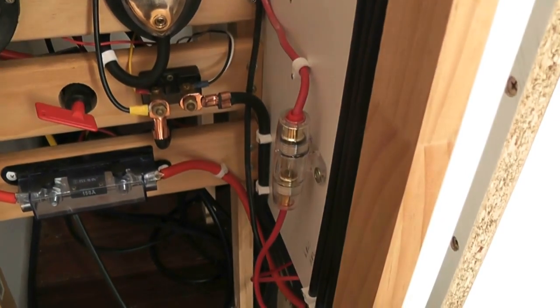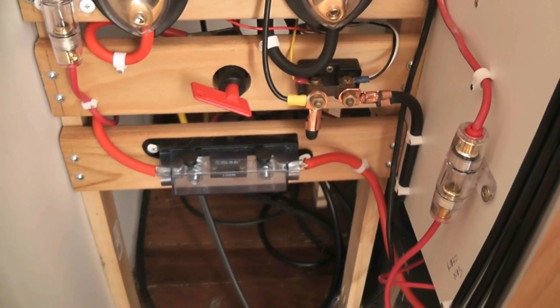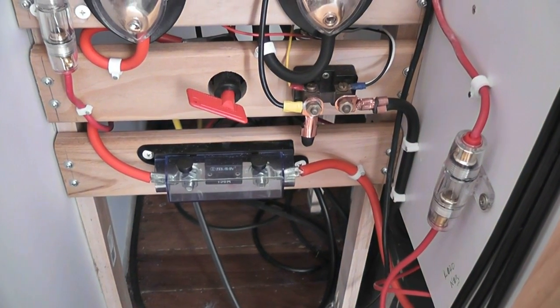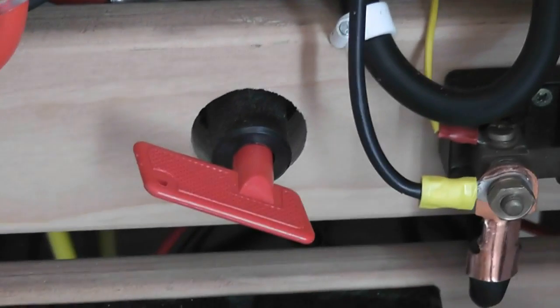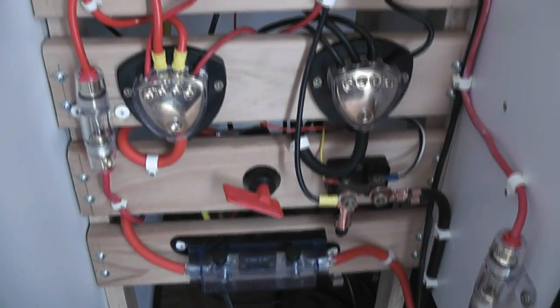If we now look at the DC side of things, the main feed from the battery comes through the system main fuse. It's a 160 amp. That then comes around and comes up to that red key, which is the main on/off, so I can shut down all of the DC at the same time.